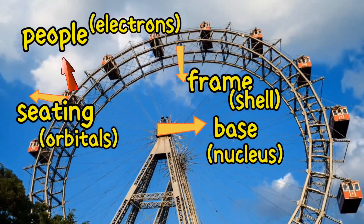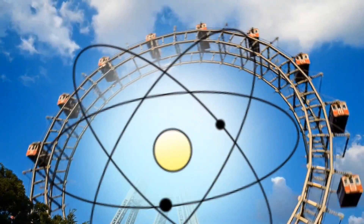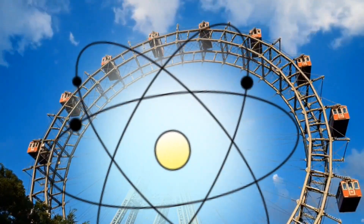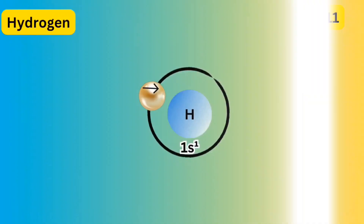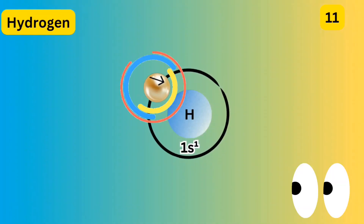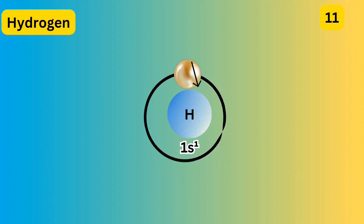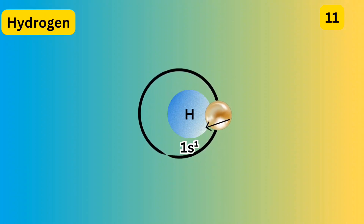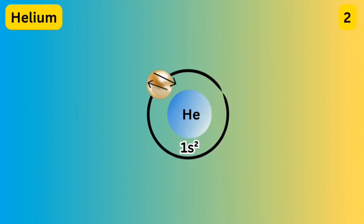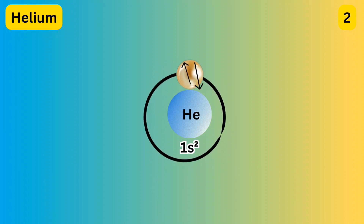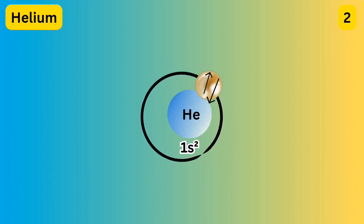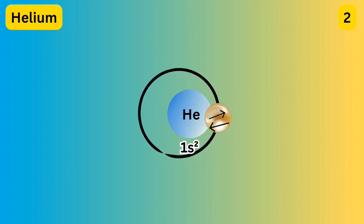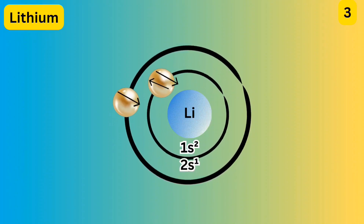Now let's discuss each element's atomic structure and electronic configuration. In a hydrogen atom there is only one electron in the s orbital in the first shell, so the electronic configuration is 1s1. In helium there are two electrons in the s orbital, so the electronic configuration is 1s2.